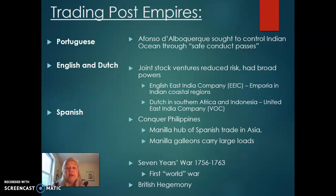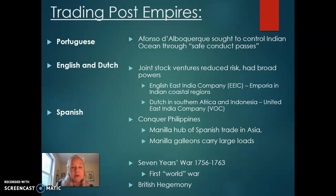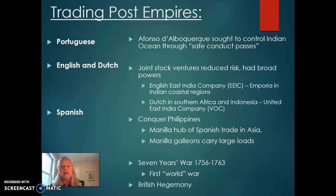The English and Dutch started joint stock ventures — ventures where perhaps 100 different investors would invest in a particular ship to sail to India, Indonesia, or China. If a ship sank, being a joint stock venture reduced individual risk. These joint stock ventures had really broad powers: they could declare war and commandeer other ships. The two most notable companies were the EEIC — the English East India Company — which developed emporia, trading posts especially along Indian coastal regions, and the Dutch VOC, which found its way to Southern Africa, colonized it for a period, as well as Indonesia.